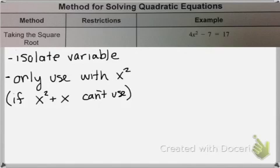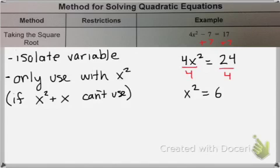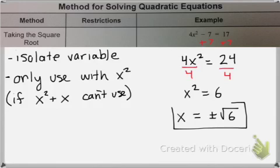So here's the example. So first we have to isolate our variable by adding 7 to both sides. And then we divide both sides by 4. And then we take the plus or minus square root of both sides. And then you simplify if you can, but square root of 6 can't be simplified, so that's our answer.